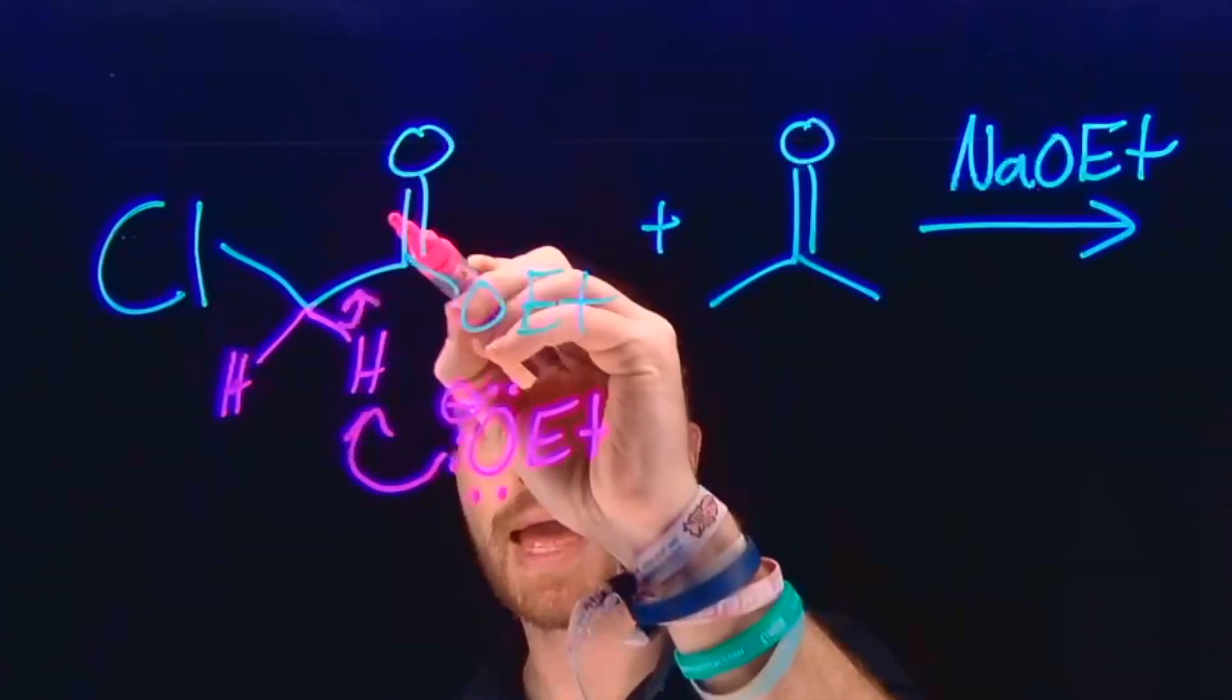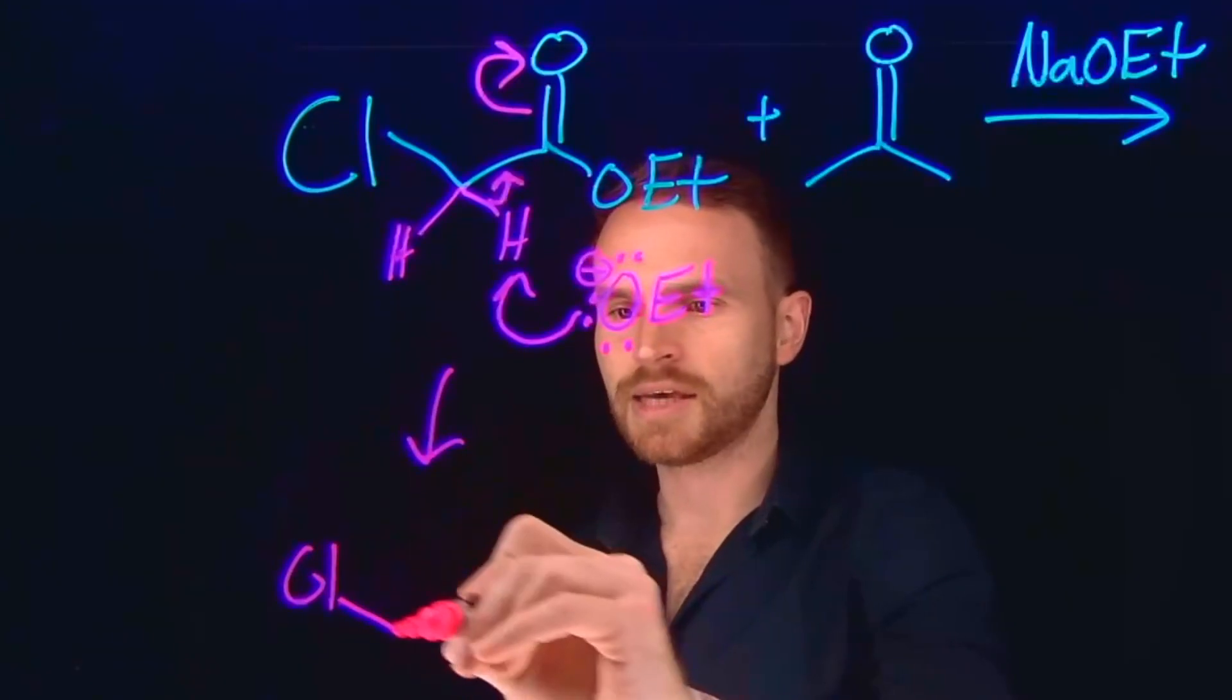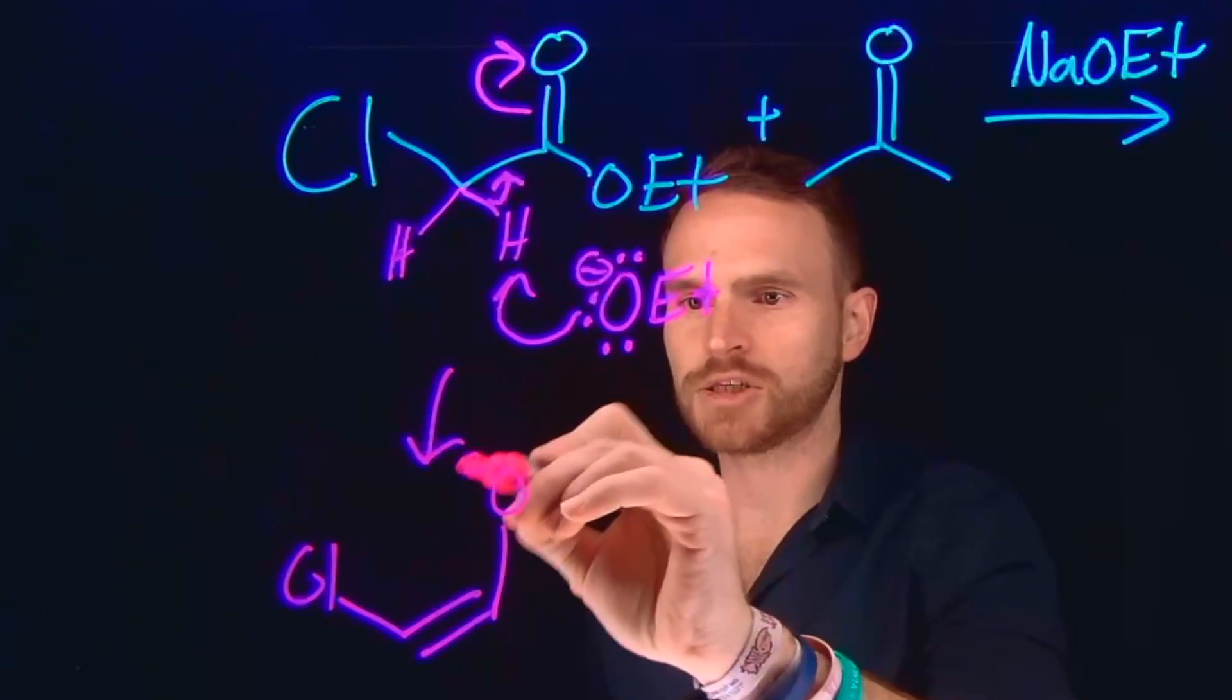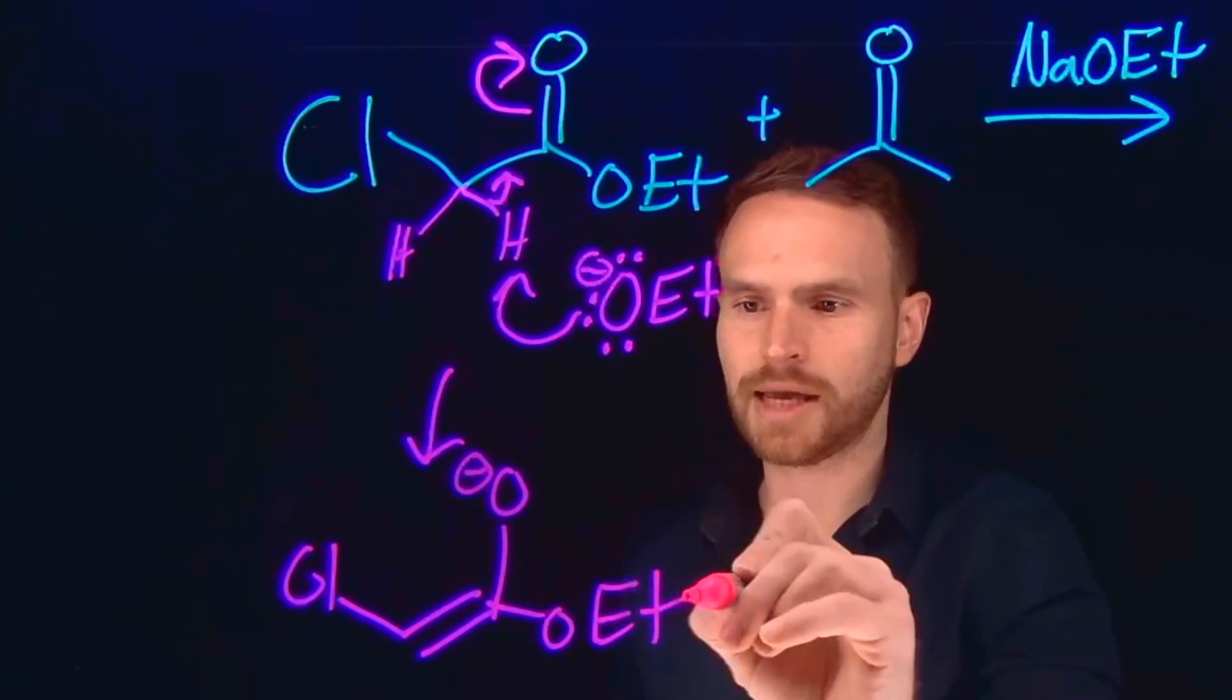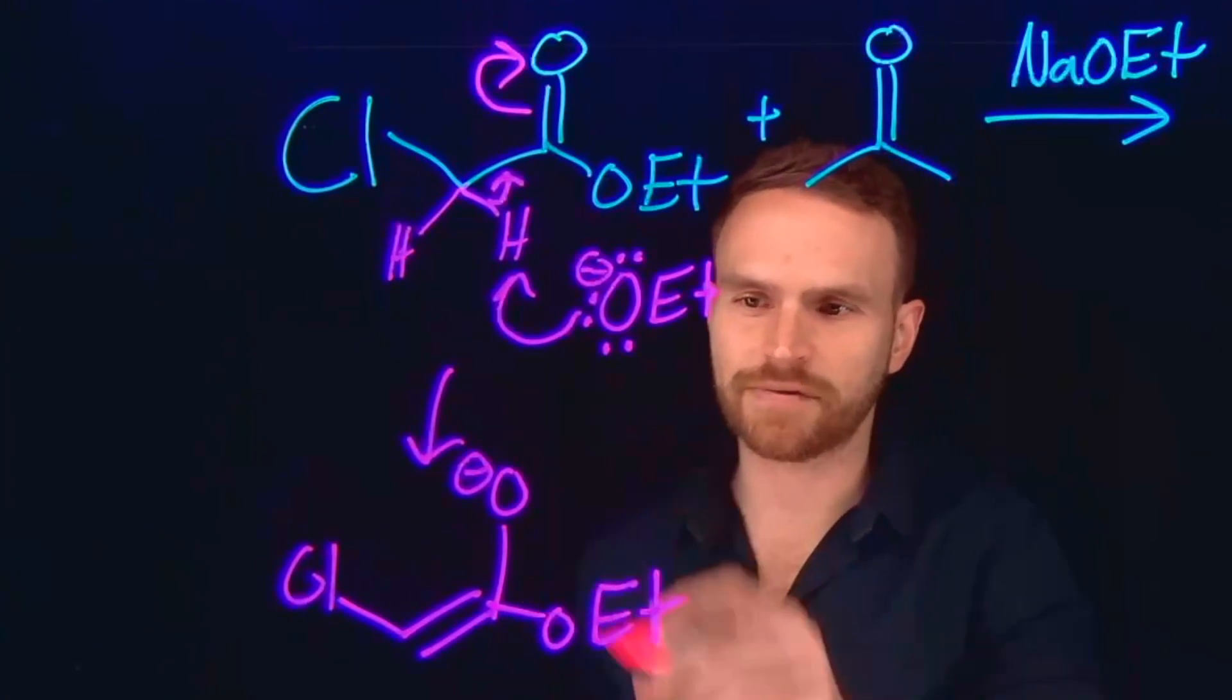So this is going to form an enolate species at this position, giving us this overall transformation where now you have this enolate which has been formed at this position. It's called an enolate because you have this alkene, which is where the 'ene' comes from, and this negatively charged oxygen.